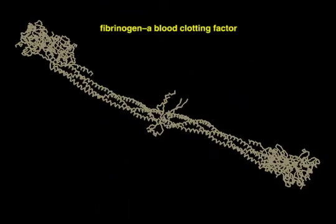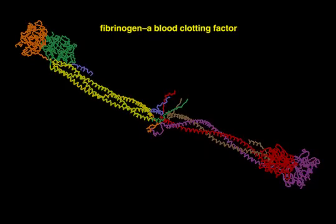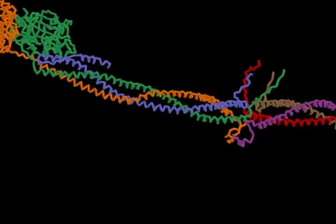Coiled coils are often found in elongated, fibrous proteins. The fibrous nature of this protein is intimately related to its ability to form clots.